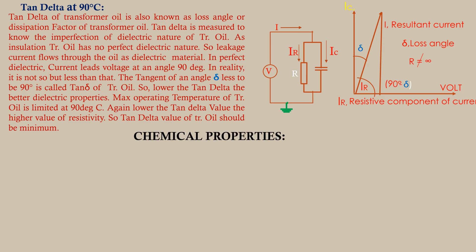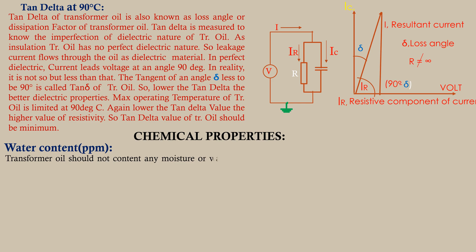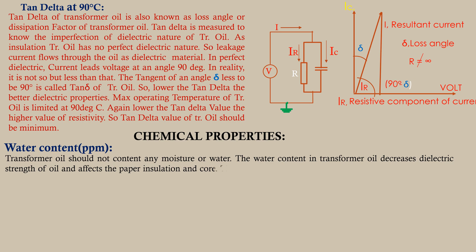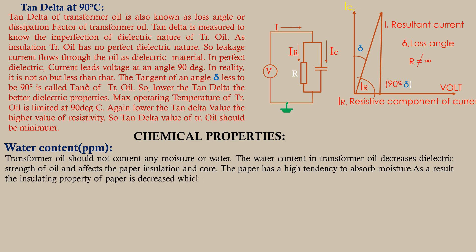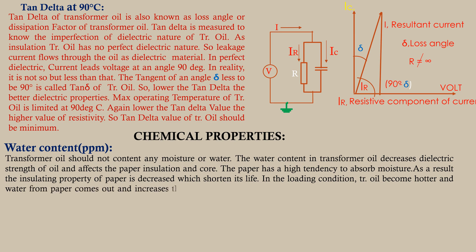Chemical properties — Water content in PPM: transformer oil should not contain any moisture or water. Water content decreases the dielectric strength and affects the paper insulation and core. Paper has a high tendency to absorb moisture, which decreases its insulating property and shortens its life. Under loading conditions, transformer oil becomes hotter and water from the paper comes out, increasing the water presence in the oil, which has a detrimental effect on the transformer oil.